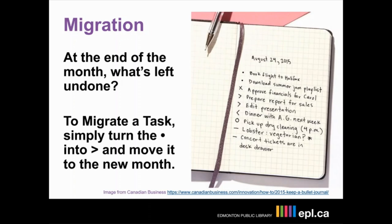If there are tasks and events you want to schedule to another month, add those to your future log. To migrate a task, you just change your bullet into an arrow to indicate that you've moved it somewhere else. This makes it really easy to review your log and see if you've missed anything, because everything should either be crossed out if completed, turned into an arrow if migrated, or the entire task crossed out if it's irrelevant. Migration can be a little overwhelming at first — part of it is setting up a habit. Whether you do this at the end of your week or at the beginning of every month, it's about doing it consistently.